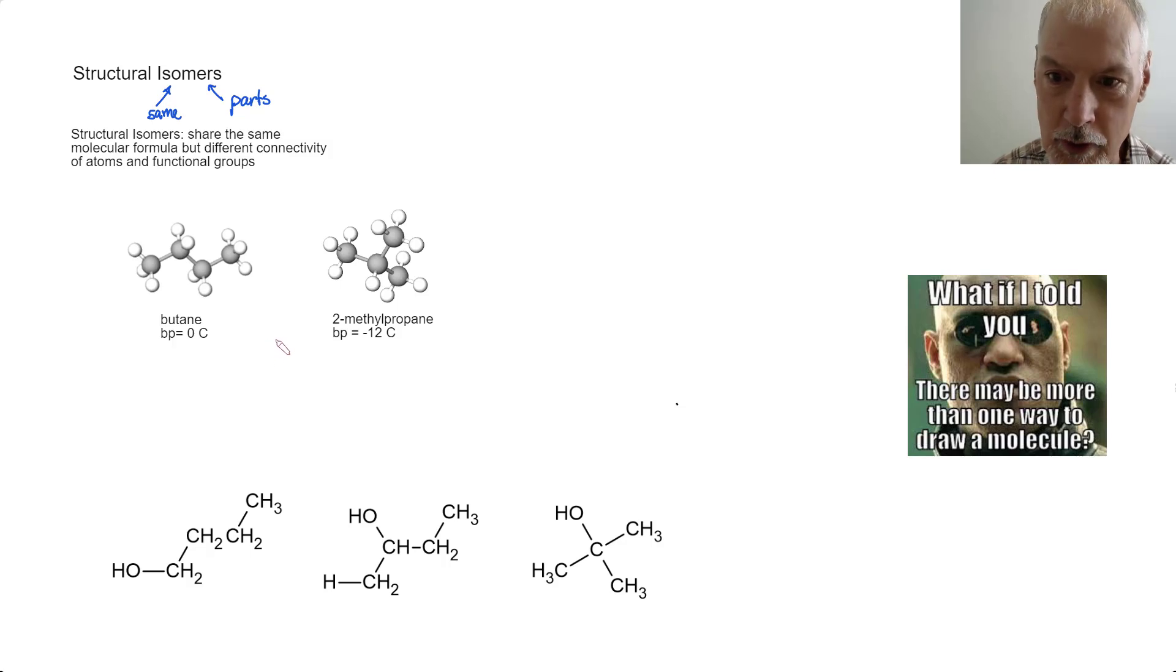Here I have an example of what are called isomers. First, let's look at their formula. They both contain four carbons and they both contain 10 hydrogens. So they share the same number and types of atoms, but they have different connectivities.